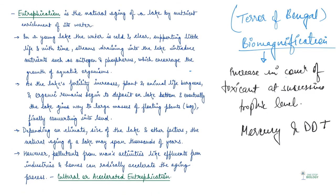Eutrophication is nothing but natural aging of a lake by nutrient enrichment of its water. So basically, in a young lake, the water is cold and clear, supporting little life. With time, streams draining into the lake introduces nutrients such as nitrogen and phosphorus. Now, this encourages growth of aquatic organisms. Now, because the lake's fertility increases, the plant and animal life increases and organic remains begin to deposit on the lake bottom. Now, over the centuries, when the silt and organic debris, all of this pile up, the lake grows shallower and warmer.